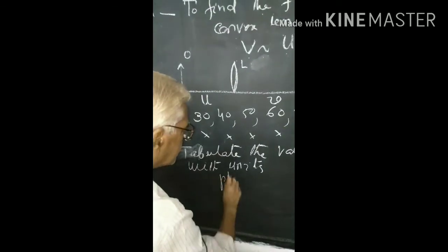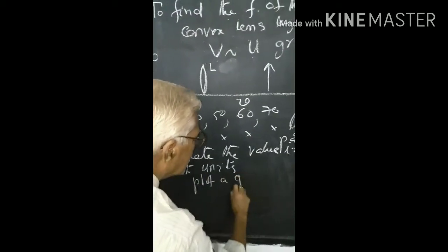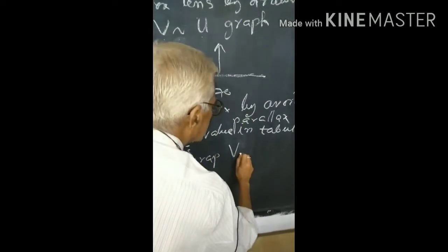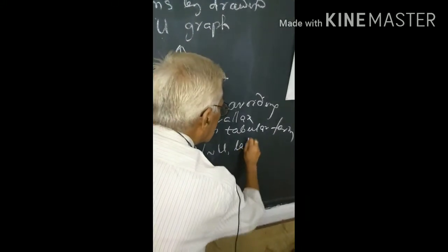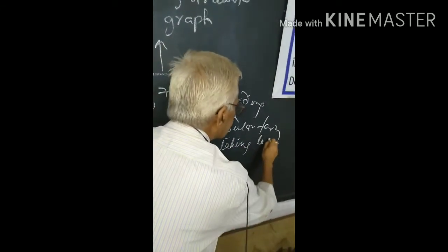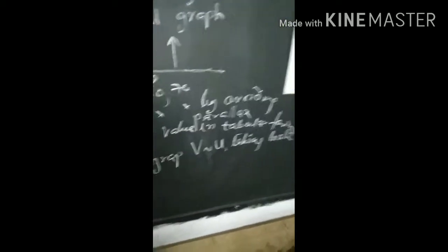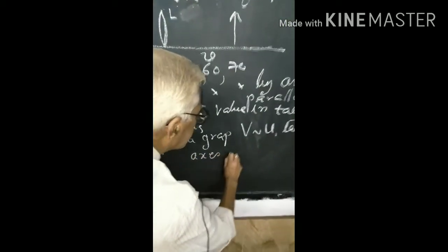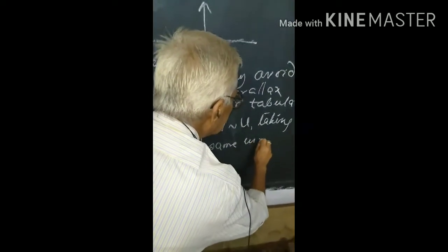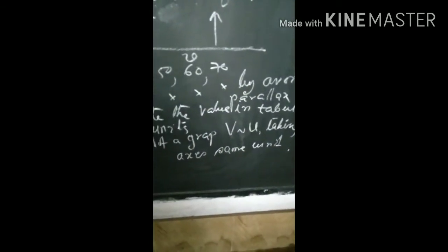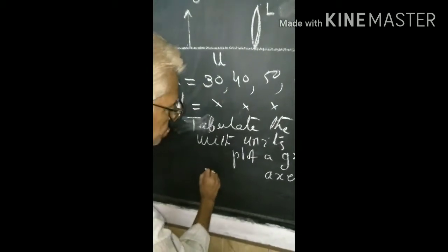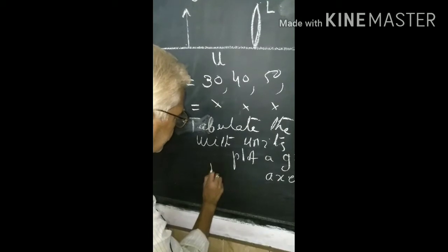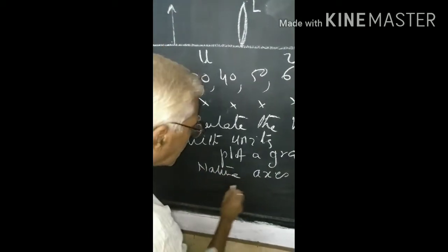Then plot v against u on both axes with the same scale — for example, one centimeter is equal to n centimeters. That is the nature of the graph.